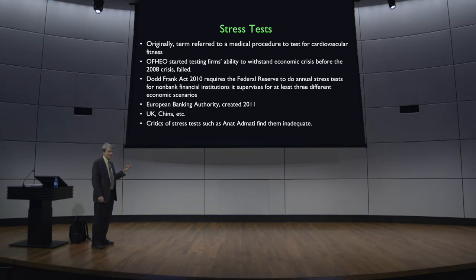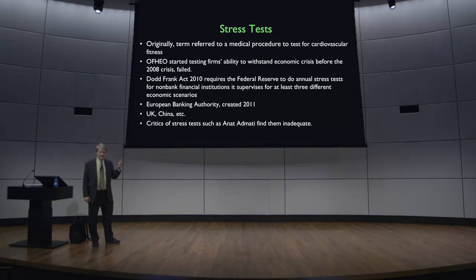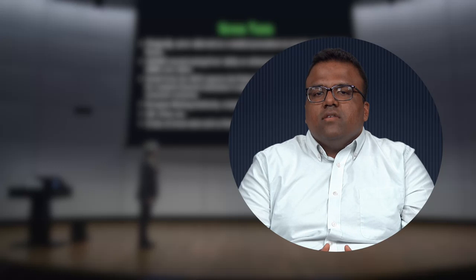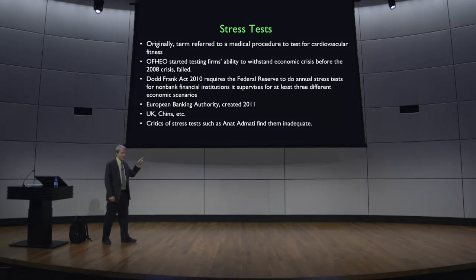The scenarios might include what would happen if there were a severe recession, or if the dollar depreciated or appreciated, or if there's a short-term liquidity crisis where the ability to borrow money dries up. The Dodd-Frank Wall Street Reform and Consumer Protection Act was passed into federal law on July 21, 2010 as a response to the financial crisis of 2007 to 2008, constituting the most significant changes to U.S. financial regulation since the reforms following the Great Depression.